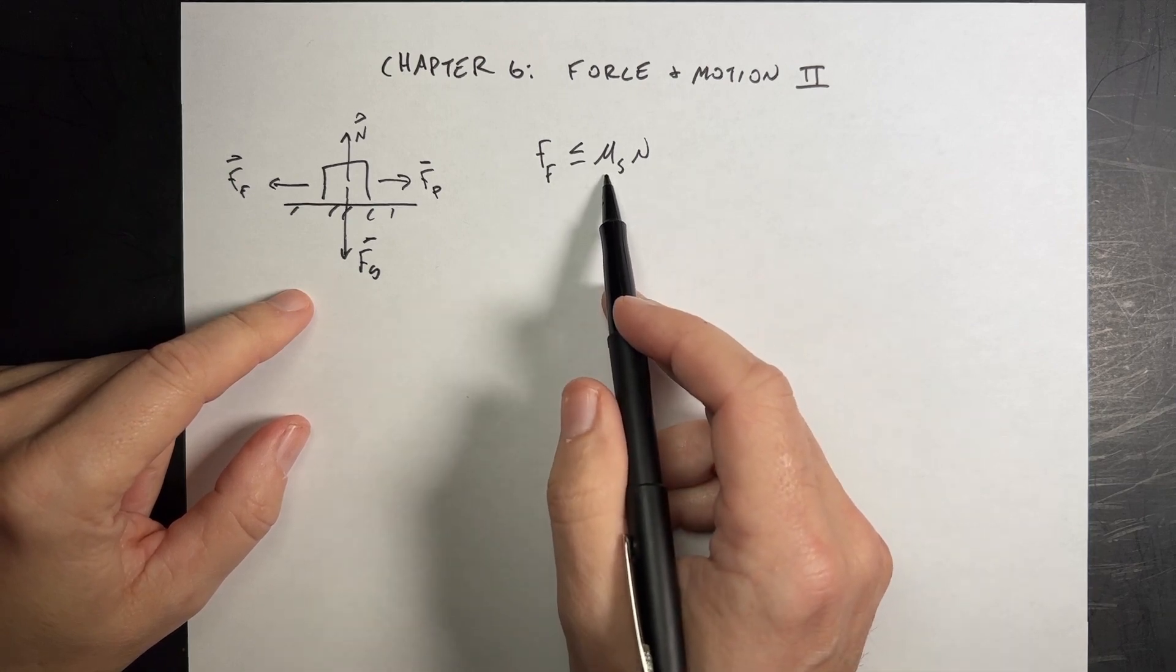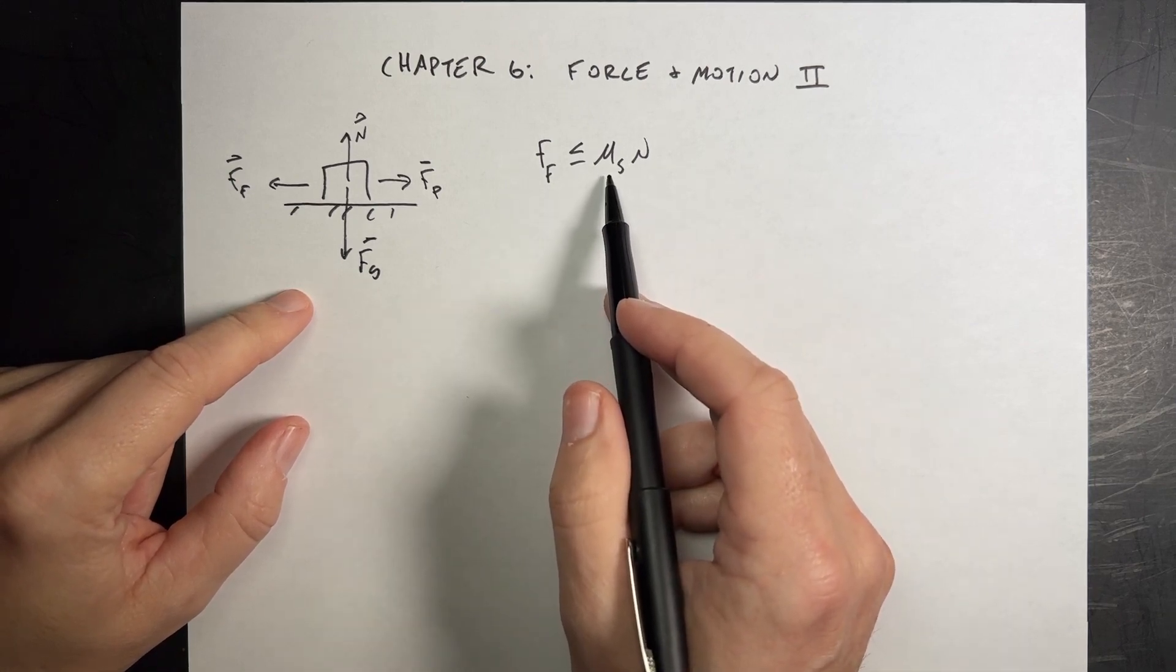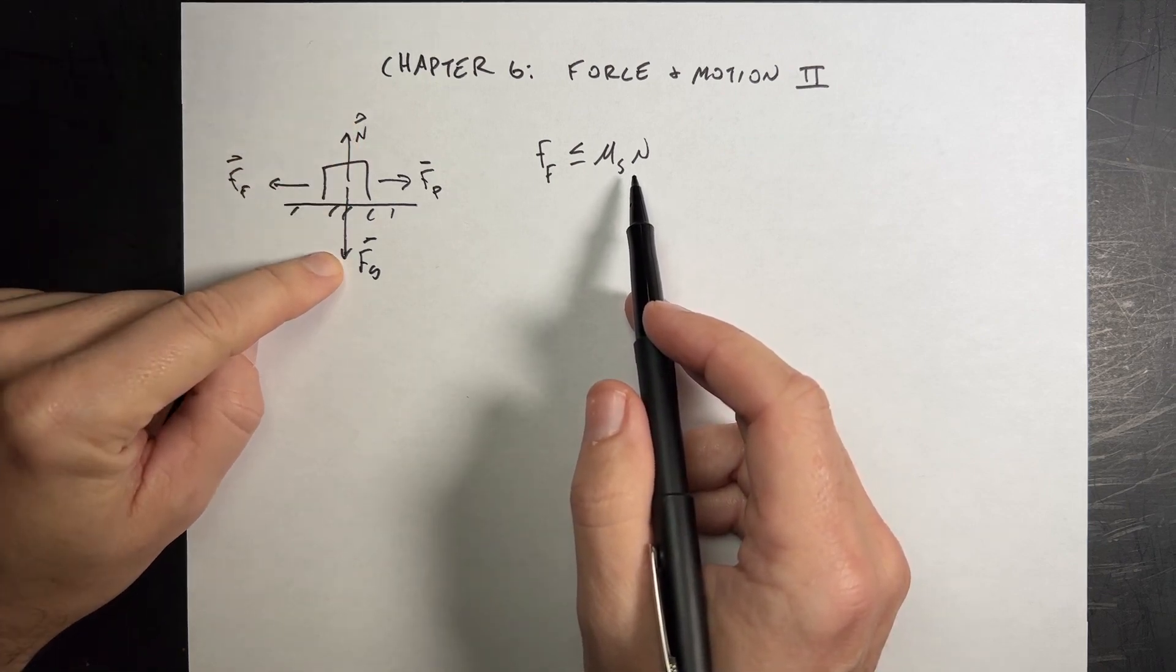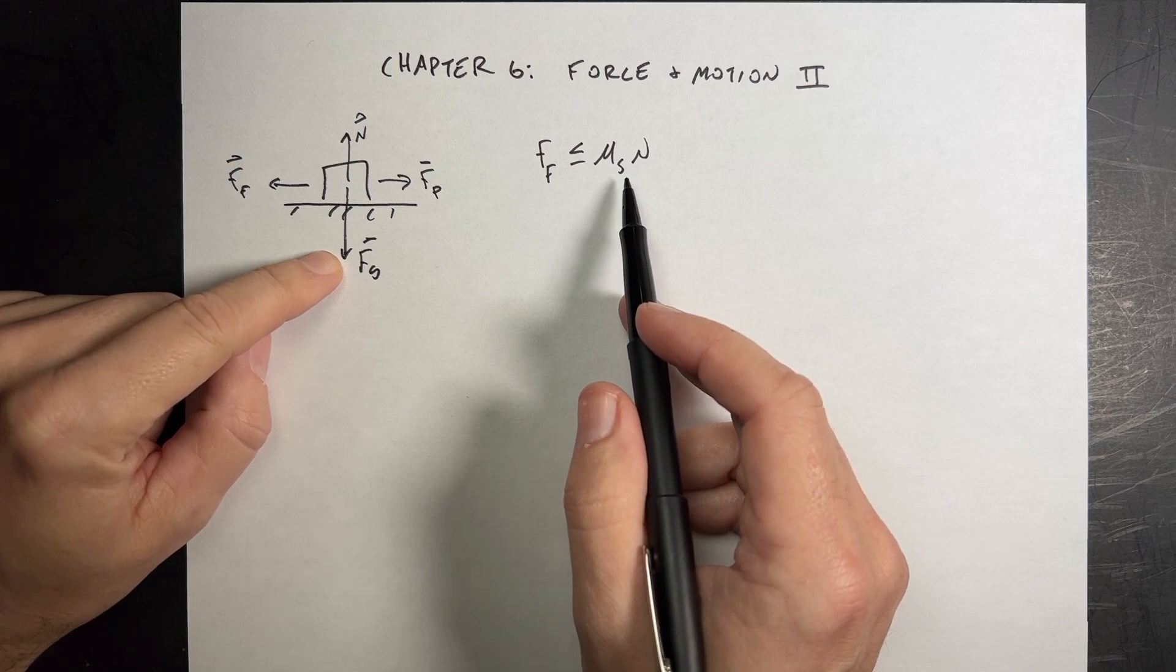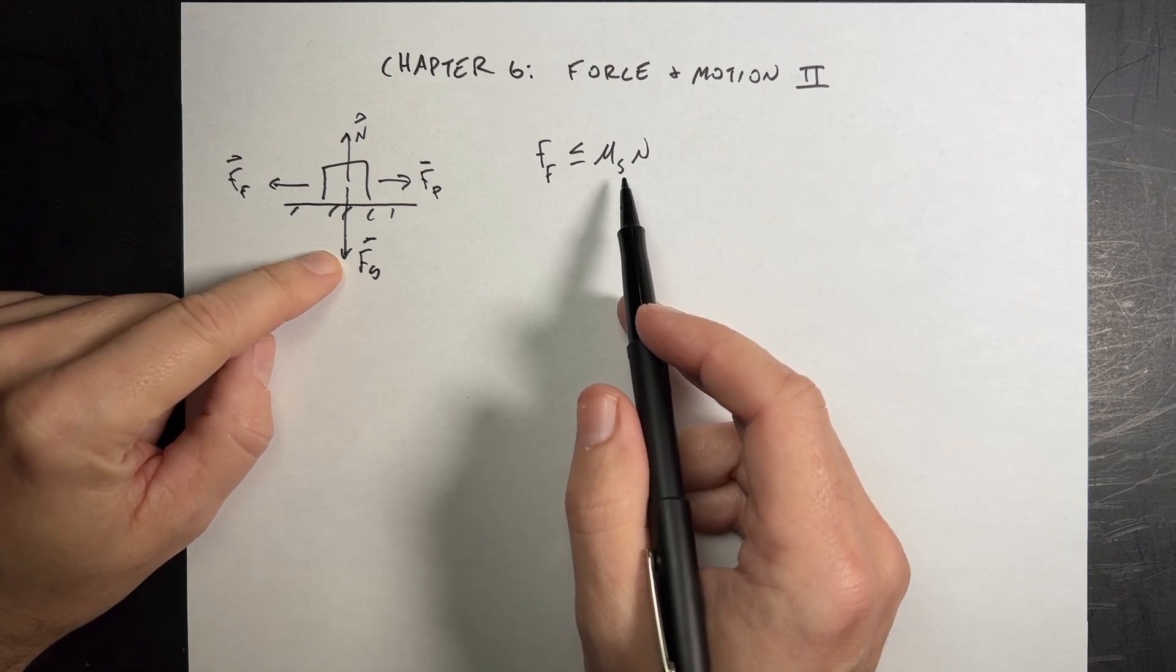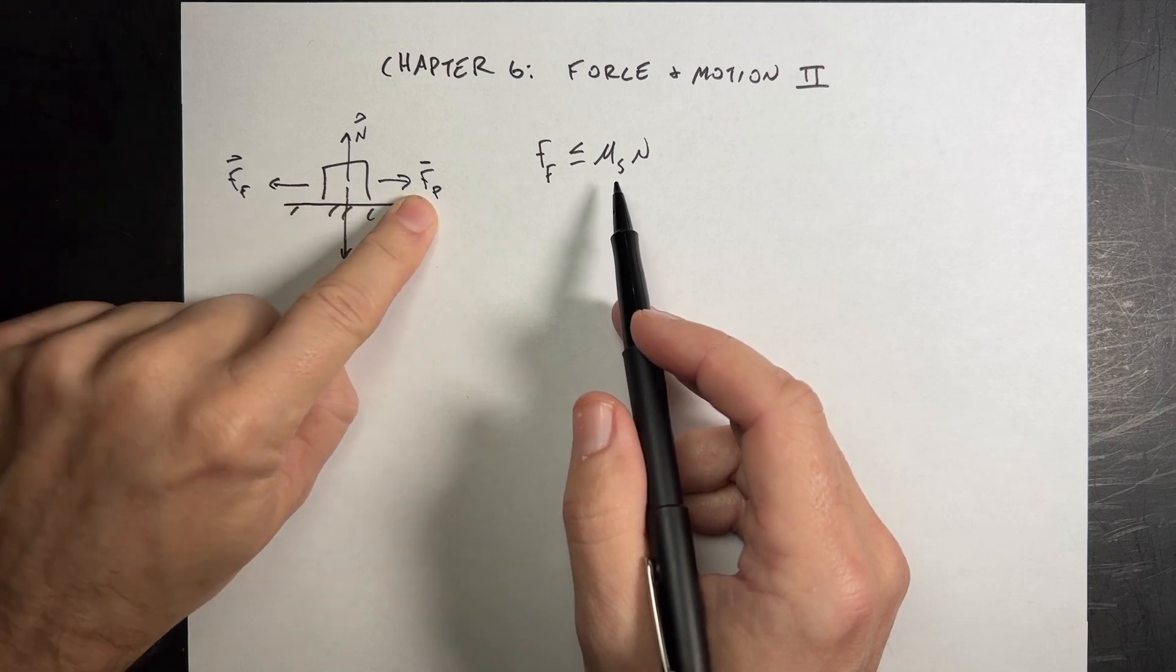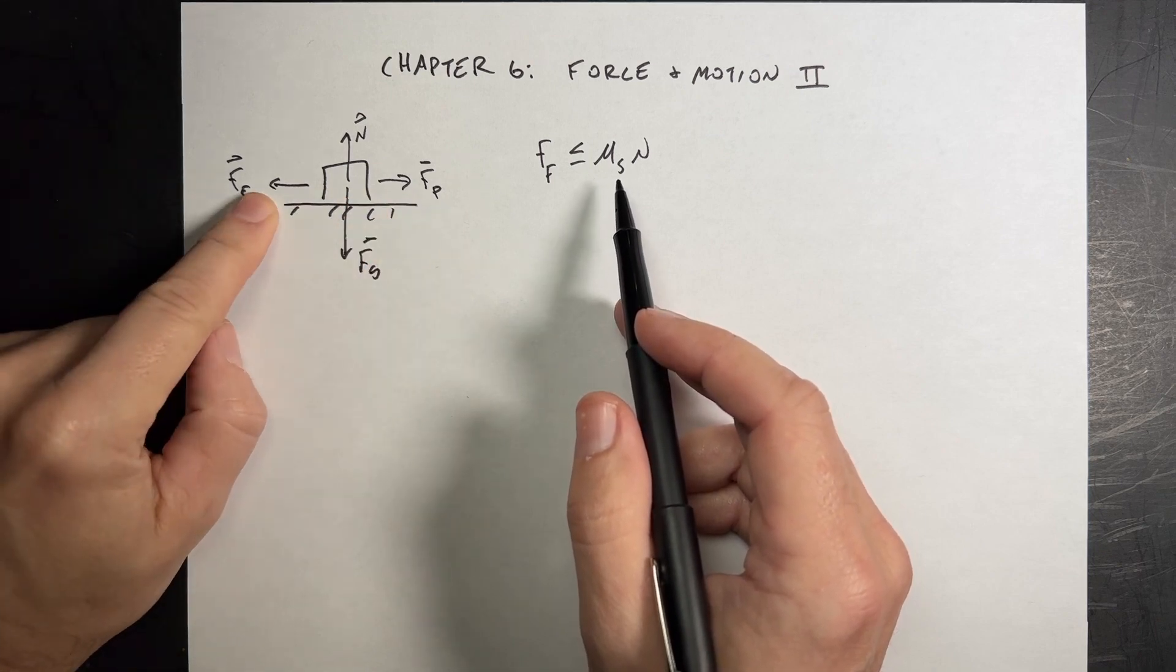This is the coefficient of static friction that depends on the two types of surfaces interacting. And that's the normal force. So if I push these two things harder together, then there will be a greater frictional force. If I change the type of material, it could be greater too. But just pushing on this can make a greater frictional force.